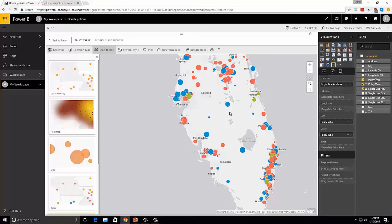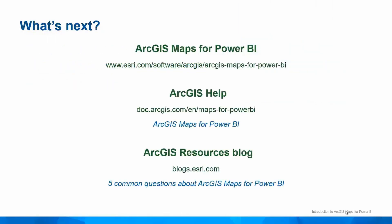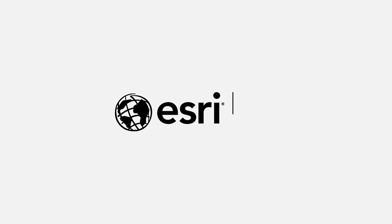Let's switch back to the presentation and review what we've learned. We learned how to add data to the map, how to use clustering to aggregate data points to see patterns, and how to do bivariate mapping with the size and color field wells. To learn more, check out the product page and the documentation site to get the very latest information about ArcGIS Maps for Power BI. On behalf of everyone at Esri, thank you for watching.